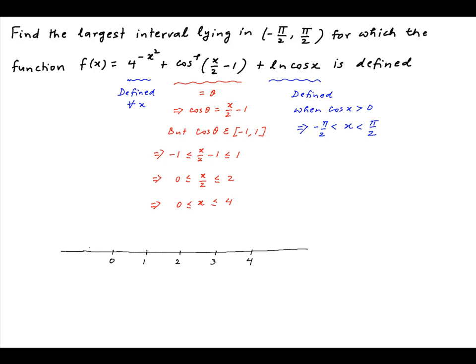Now we plot all of these conditions on the number line. The first condition is true for all numbers on the number line. The second condition is true when x lies between 0 and 4. And the third condition is true when x lies between -π/2, which is roughly -1.5, to π/2, which is roughly +1.5.